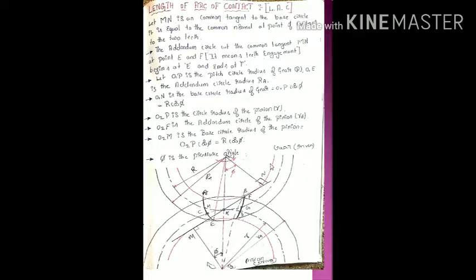So MN is the common tangent, and it is equal to the common normal at the point of contact. The addendum circle cuts the common tangent MN at point E. When MN is drawn, the line passes through the addendum circles.